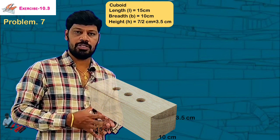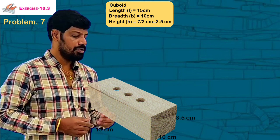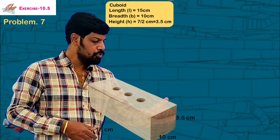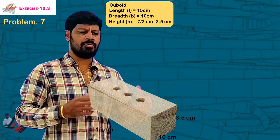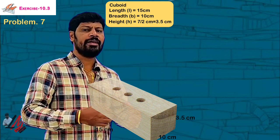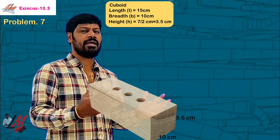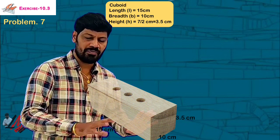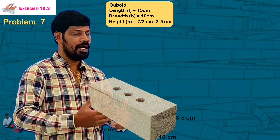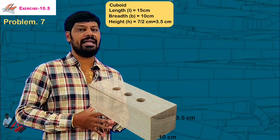That's why I use 7 by 2 for 3.5. Using these three pieces of information, we can calculate the volume, surface area, and total surface area — everything.